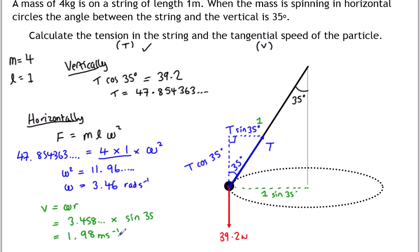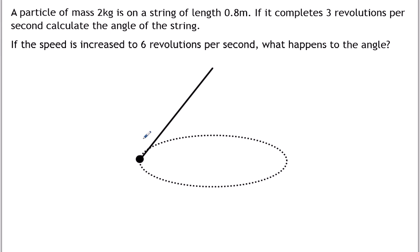If you wanted the angle to increase, the speed would have to increase as well. As this angle increases, T sin(alpha) gets bigger, so the force towards the center gets bigger. Since m and L are fixed, omega has to increase — not linearly because there's a squared involved — but that's why an increased angle is linked to an increase in angular velocity and tangential speed.